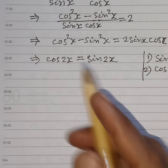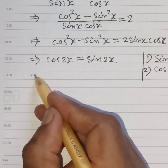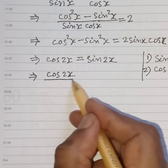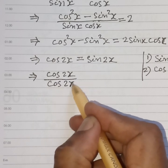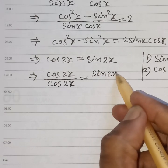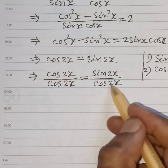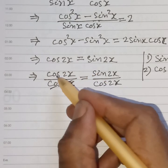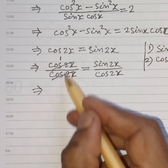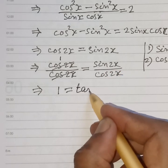Now we divide both sides by cos 2x. So cos 2x divided by cos 2x equals sin 2x divided by cos 2x. This gives us 1 equals sin 2x over cos 2x, which is tan 2x.